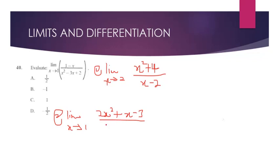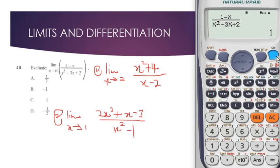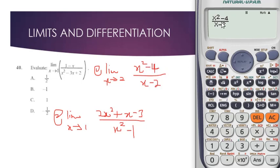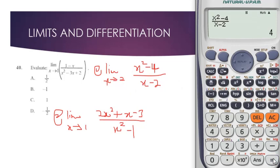So we have (x² - 4) divided by (x - 2) with x approaching 2. After punching the question into the calculator, you pick a value that is very close to 2 — something like 1.9999. You click equals and you end up with the limit. See how simple this is!